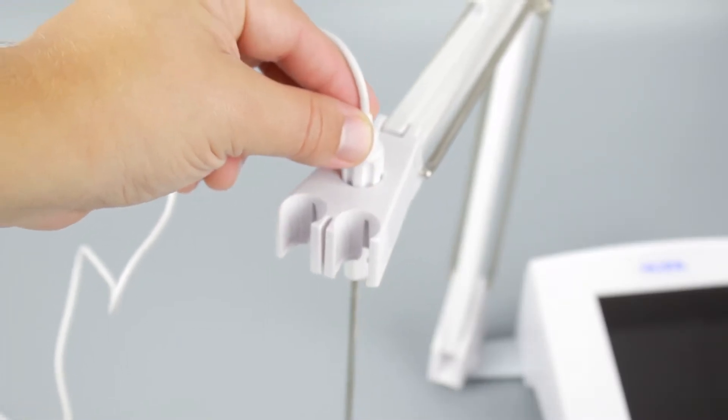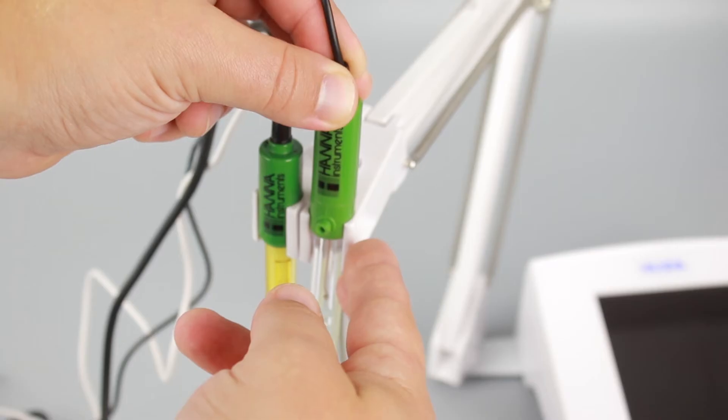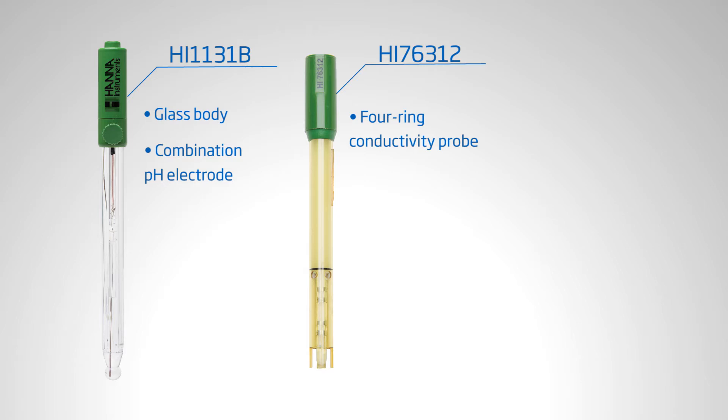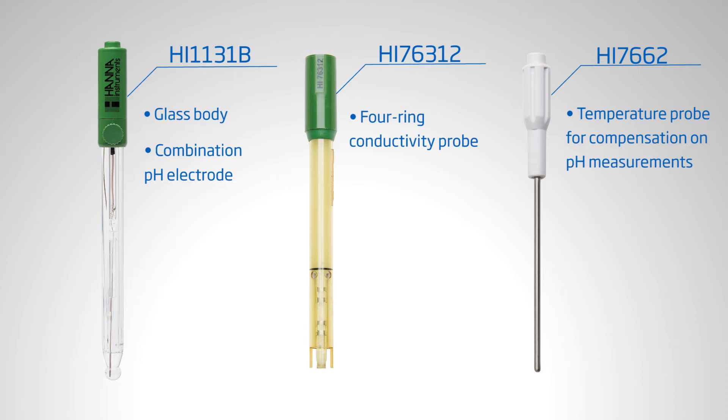To set up your meter, first insert the probe and electrodes into place. The meter is supplied with the HI1131B glass body combination pH electrode and HI76312 four-ring connectivity probe. You'll also find the HI7662 temperature probe for compensation on pH measurements.